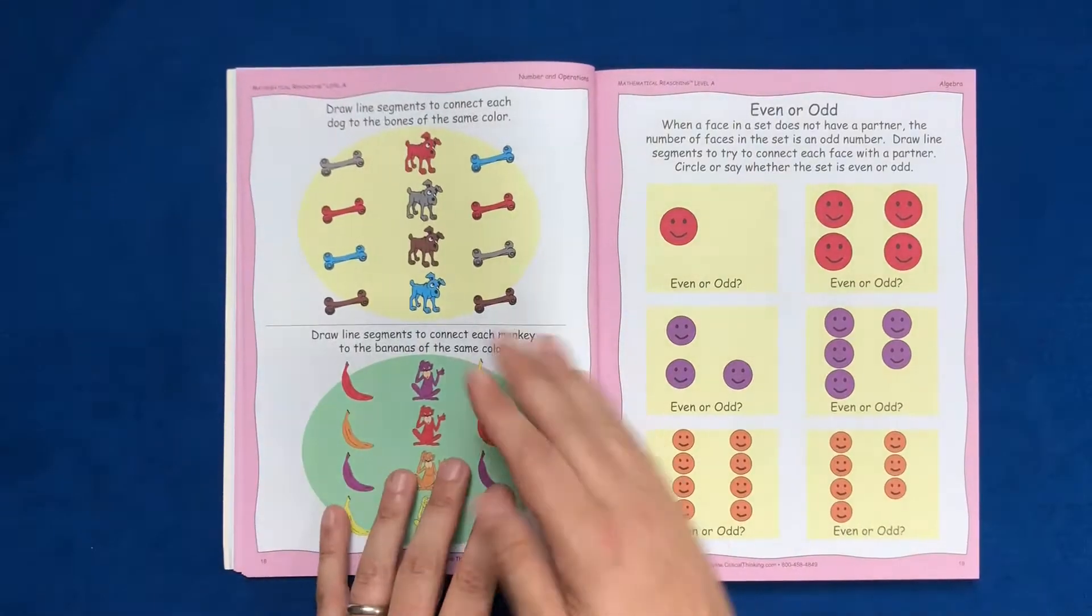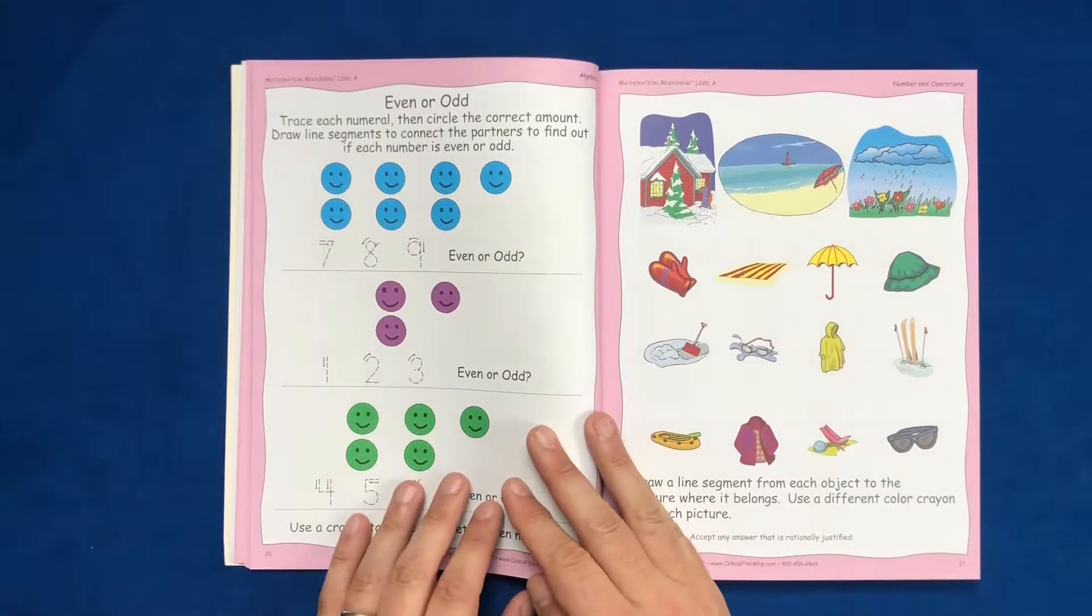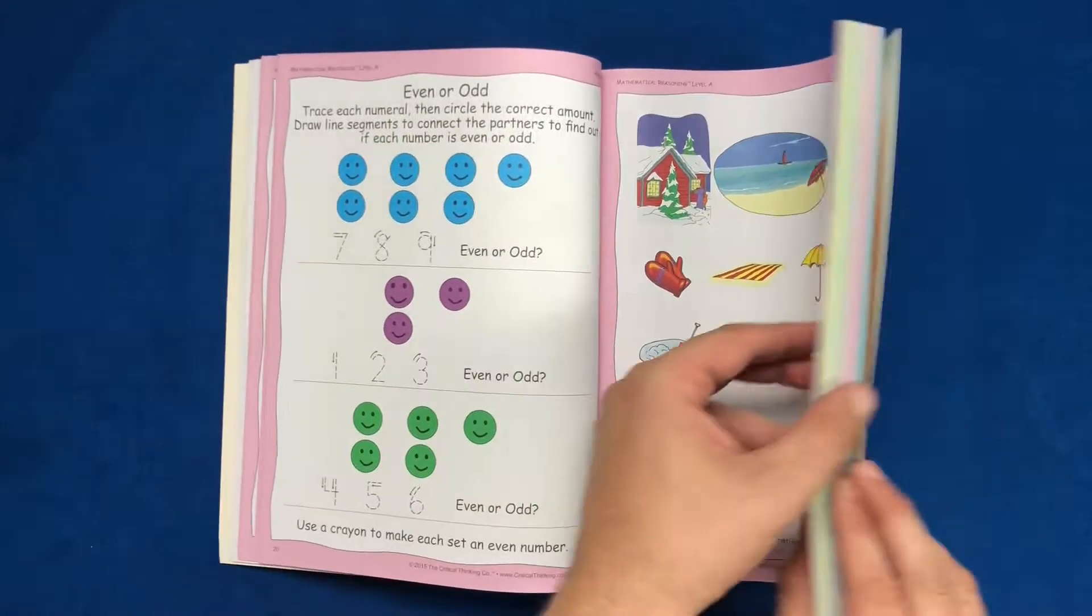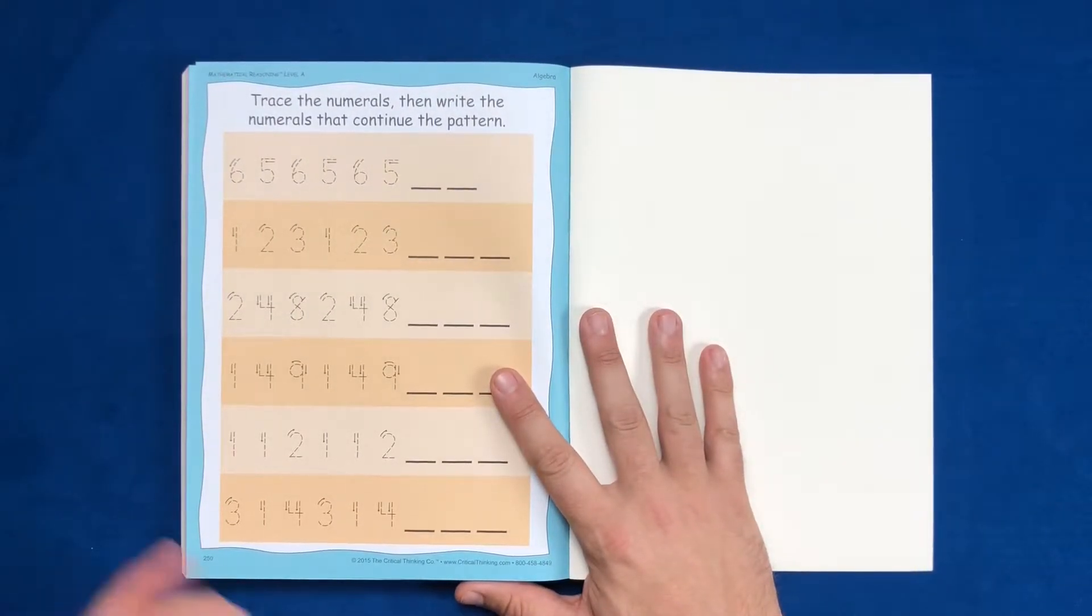As you move through, you can absolutely see the progression of the activities that the user will have. One thing that they don't have here is at the end of any type of unit or chapter, they do not have any type of assessment. So basically, your learner will just be going through, doing pages every day, however many pages that might be.